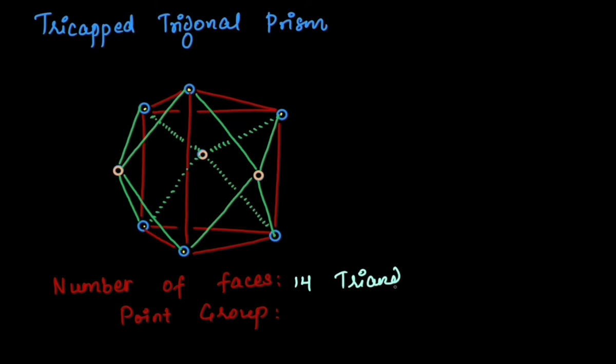Twelve newly generated and two from the parent making it fourteen triangular faces. And every square face is symmetrically capped and hence this also belongs to D3H as that of its parent polyhedra trigonal prism.